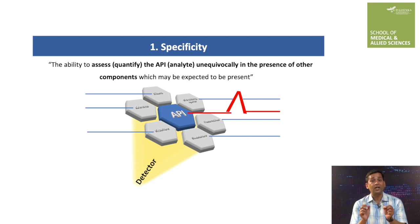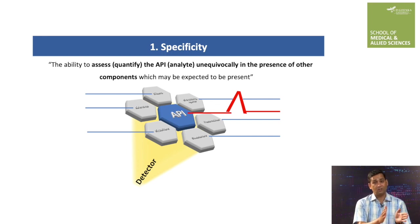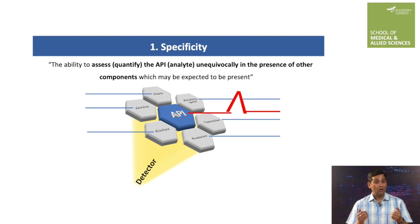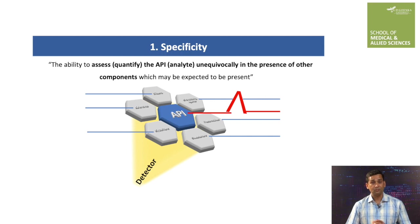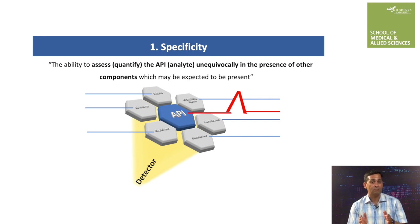In this case, the analytical method should be developed in such a manner that it should be able to generate a distinct, prominent signal compared to the other excipients, to detect and quantify the target drug. If we take the example of chromatographic separation by HPLC, the chromatographic method should show a well-resolved API peak in a very distinctive manner compared to the peaks of other excipients present in the sample.